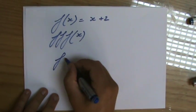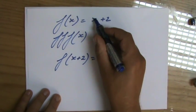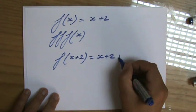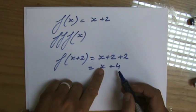I'll do it once: f(x + 2). So I'm going to put x + 2 for x. That's going to be x + 2 + 2, which is x + 4.